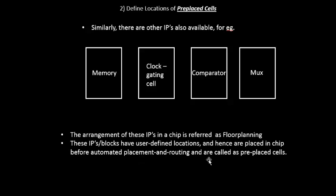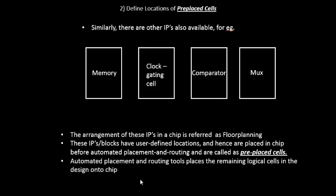Pre-placed cells have user-defined locations, and they won't be moved during automated placement and routing procedures. The automatic placement and routing tool will place the other logical cells around these pre-placed cells, but the area reserved for pre-placed cells is kept fixed.